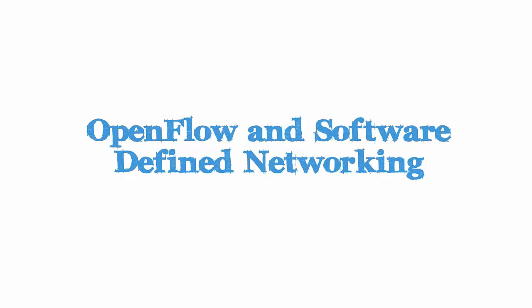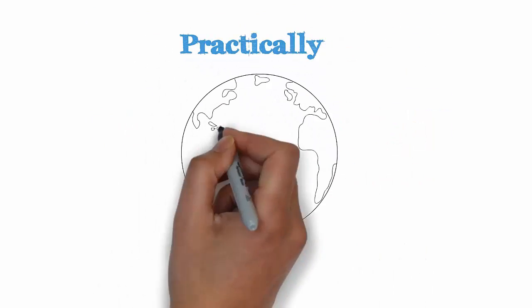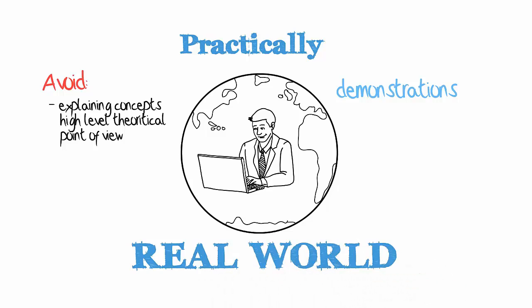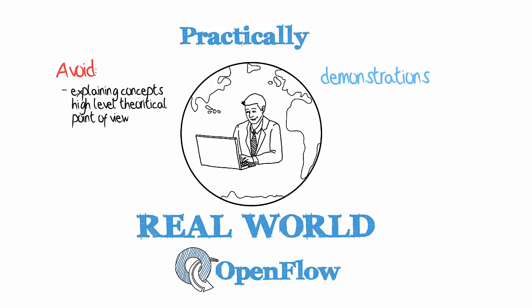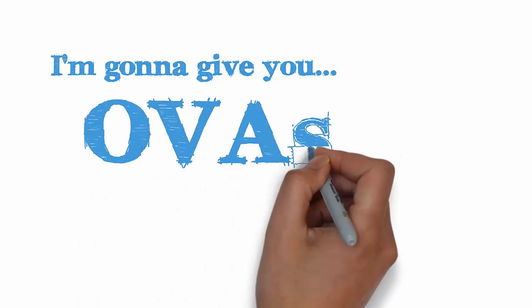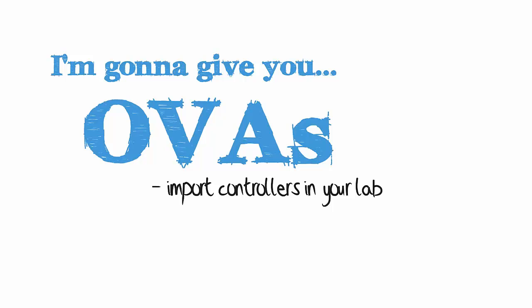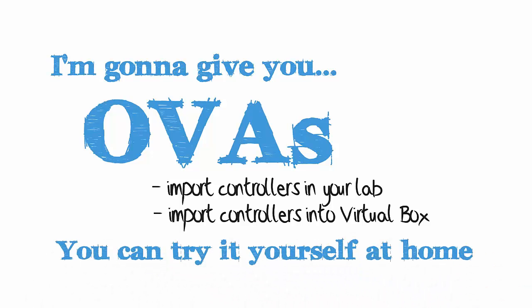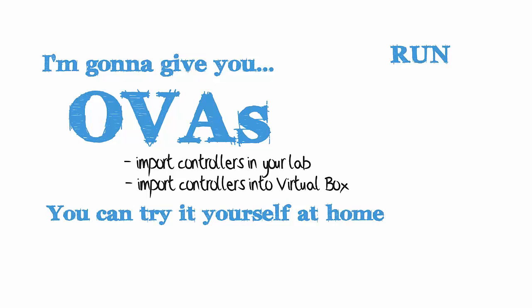In summary, this course explains OpenFlow and software-defined networking practically with lots of hands-on demonstrations. I'm going to avoid as much as possible just explaining concepts from a high-level theoretical point of view. I'm going to show you real-world deployments of software-defined networking using OpenFlow, real-world applications that you can deploy today, and explain the concepts and implementation practically. On top of that, I'm going to give you OVAs so that you can import controllers into your lab — into VirtualBox or VMware Workstation — so that you can try this yourself at home. You can run an entire OpenFlow network on your laptop using Mininet and any one of the controllers discussed in this course.